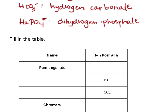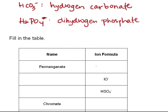We have a table here for some practice. Let's try to get through it. Permanganate is one you should just memorize, and that is MnO4-. IO- is hypoiodite.